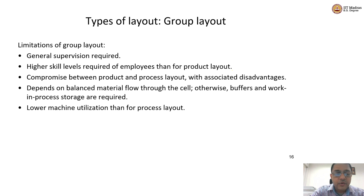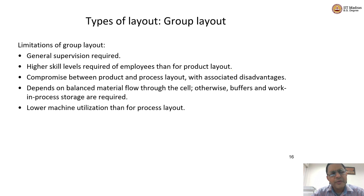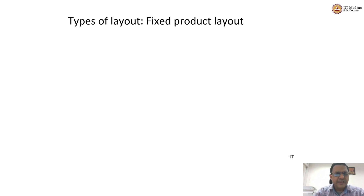Now let us see a different kind of layout altogether. The next layout will become very obvious when I tell you the product. Let us say you are Boeing or Airbus — you make the 737, the A380, the jumbo. What layout will you follow when manufacturing an A380, A320, 747, or 777? Will you actually move the plane from one workstation to the next, or from one department to another? None of that is going to happen. These kinds of products require a special type of layout called fixed product layout.